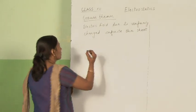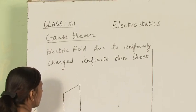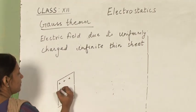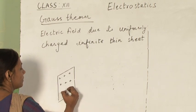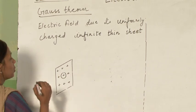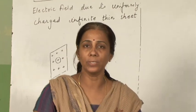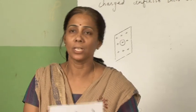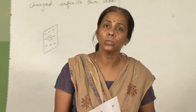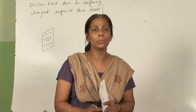Suppose this is the sheet which is uniformly charged; let us consider a small area on this. First we have to draw a Gaussian surface. What is the condition for a Gaussian surface? At any point on the Gaussian surface the electric field should be the same.